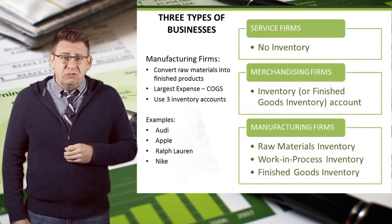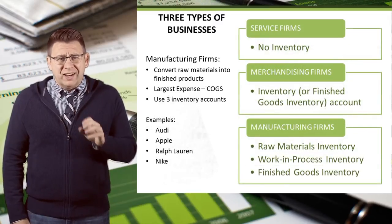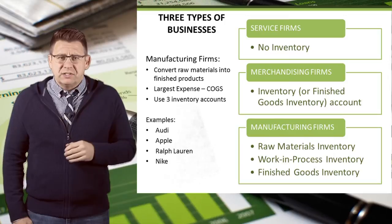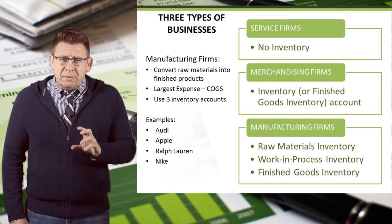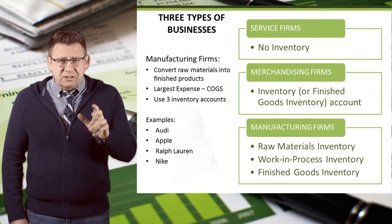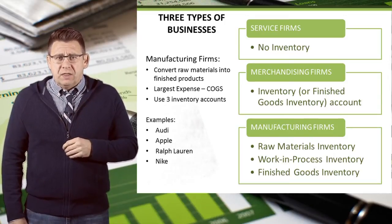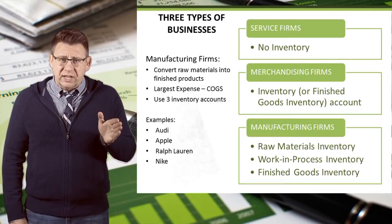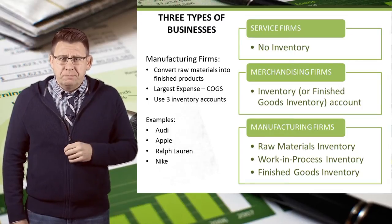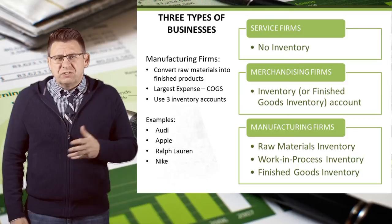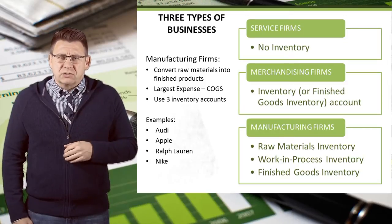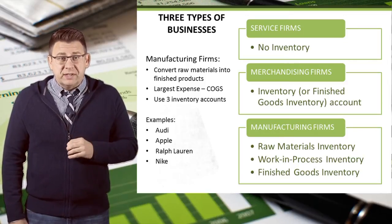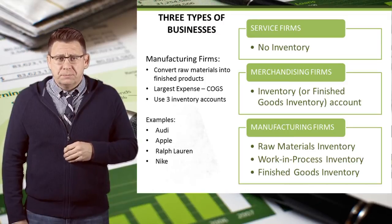Manufacturing companies use labor and other inputs like plant and equipment to convert raw materials into finished products. They sell their products to retailers or wholesalers primarily, but also to consumers via outlet stores. Their largest expense tends to be cost of goods sold.